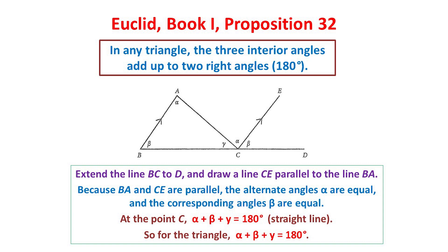Now the sloping lines BA and CE are parallel. And so the two angles marked alpha are alternate angles and so are equal. Also, the two angles marked beta are corresponding angles and so are equal. Now look at the point C. Here there are angles alpha, beta and gamma and they form a straight line. Now every straight line is 180 degrees, and so alpha plus beta plus gamma is 180 degrees. But the sum of the three angles of the triangle is also alpha plus beta plus gamma, and so is again 180 degrees. And that's the result we wanted to prove.